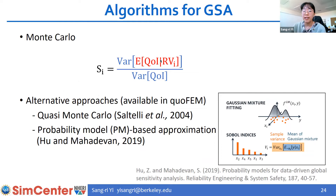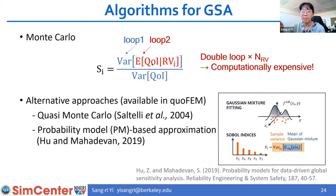How can we get estimates of the Sobol index? We can think of Monte Carlo, but it requires a double loop of the sampling process, so it's generally considered time-consuming. There are alternative approaches that are more efficient: one is quasi Monte Carlo, and the other is a probability model-based approximation method. Both of these methods are available in quoFEM.